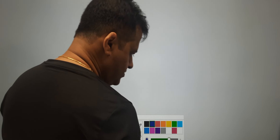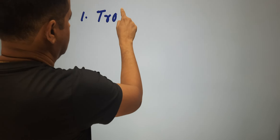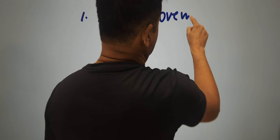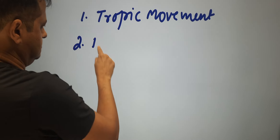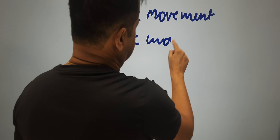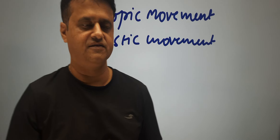There are broadly two types of movements we can classify in plants. The first is tropic movement, and the other is nastic movement. So the plant movements can be classified into two types: tropic movements and nastic movements.